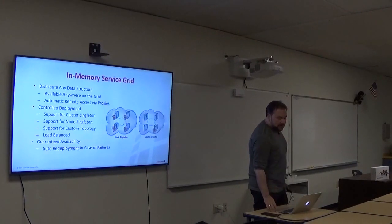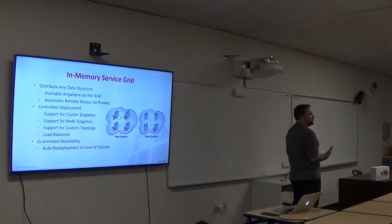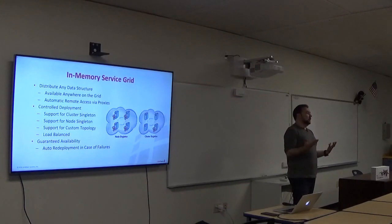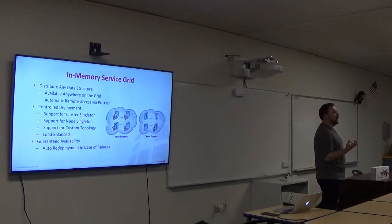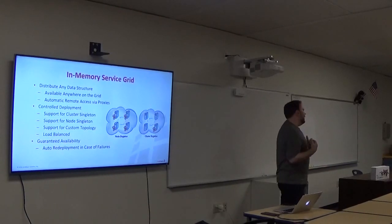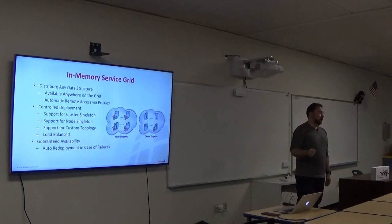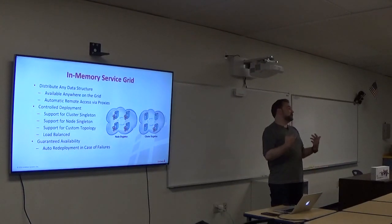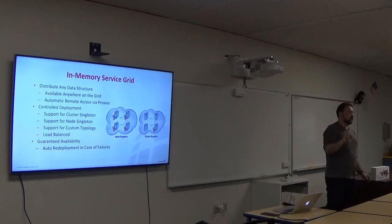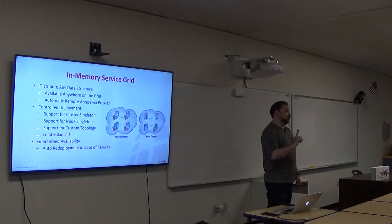Let me talk about the service grid. The service grid is essentially automatic SLA management of objects in the grid. It came from a customer request — they wanted an object that lives based on SLA, like only one instance in the cluster, and if it dies, a new one starts. You can very declaratively say: this particular service object can only have two instances on this cluster; if the node on which it's running dies, restart that service somewhere else. You can have a cluster singleton — only one service instance in the entire cluster. We manage it — the node dies, we restart it. You can also have a node singleton: just one service on each node.